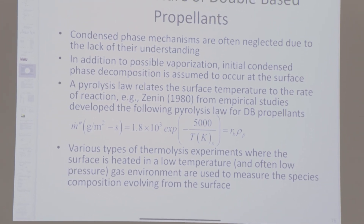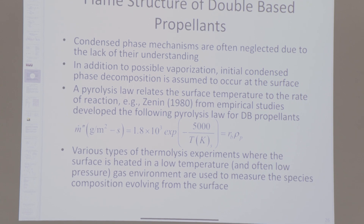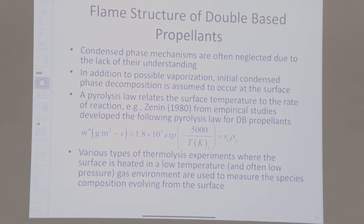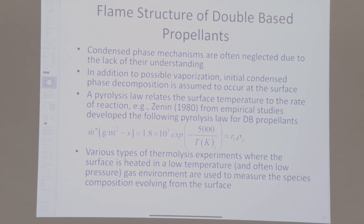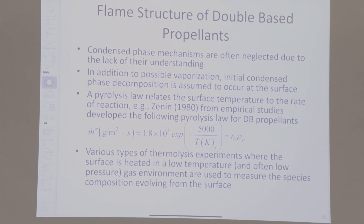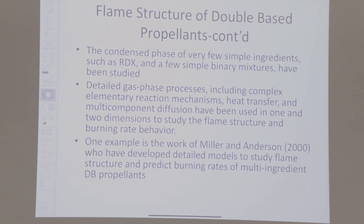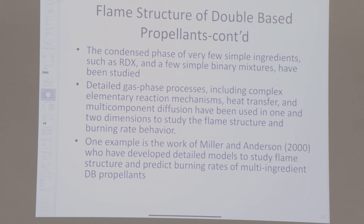Various thermolysis experiments, where the surface is heated in a low-temperature, often low-pressure gas environment, are used to measure the species composition evolving from the surface. Knowing that information, you write a global reaction: the original double base goes to these measured species at this measured regression rate. The condensed phase of very few simple ingredients — such as RDX and binary mixtures — have been studied. RDX has been studied most, and within the last five years quantum chemistry has been used for detailed condensed phase models, combined with detailed gas phase mechanisms and multicomponent diffusion.